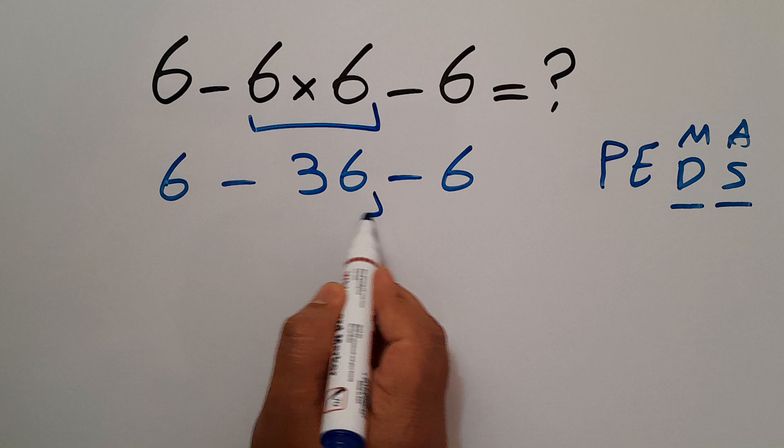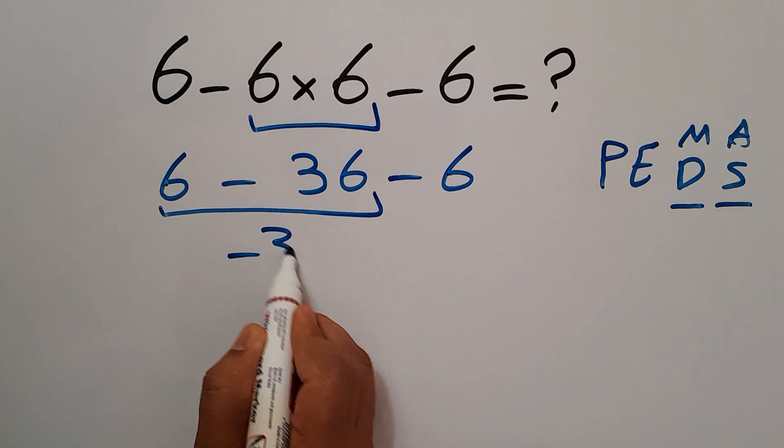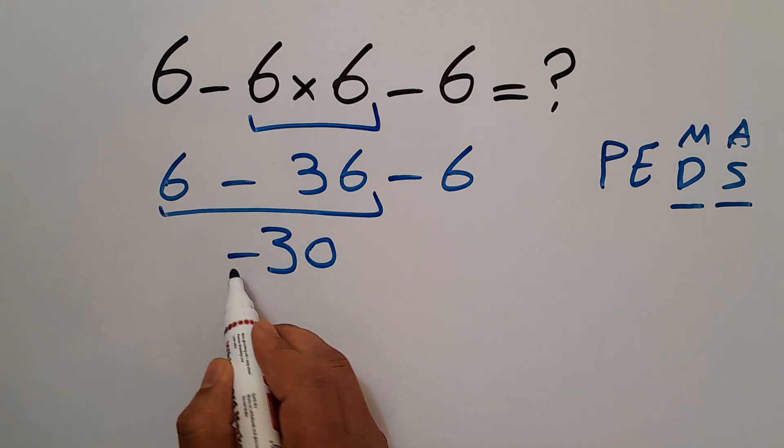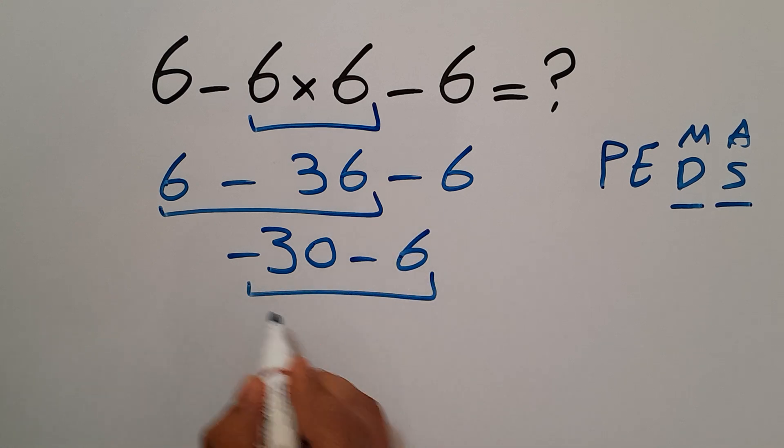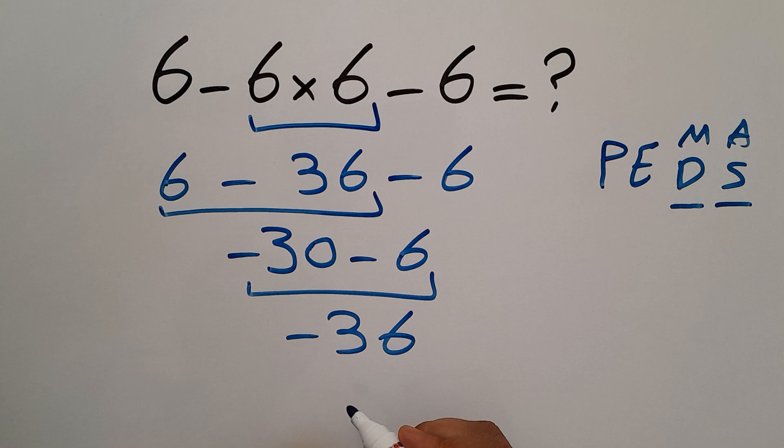So negative 30 minus 6, which equals negative 36. So our final answer to this problem is negative 36.